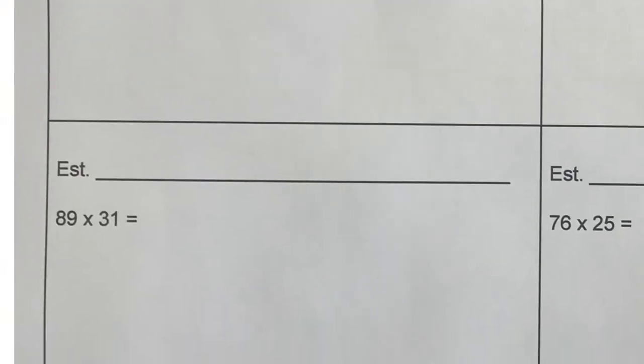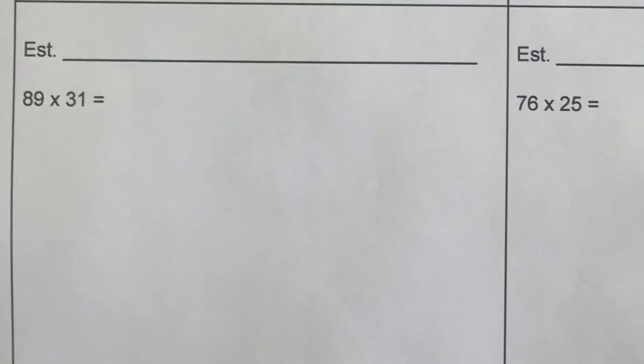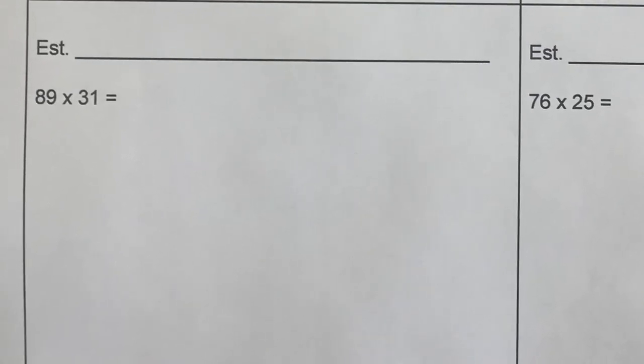Next, we've got 2 digits times 2 digits. So let's first make an estimate. And our estimate is going to be about 90 times 30. And of course, 9 times 3 is 27. So our answer will be somewhere near there.